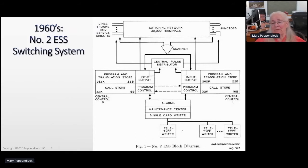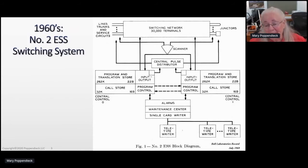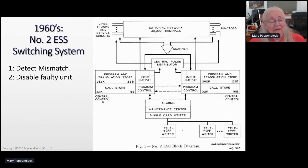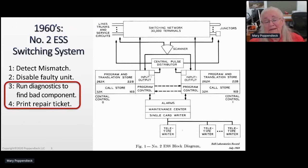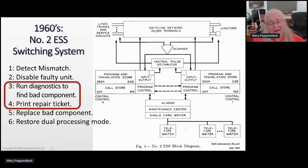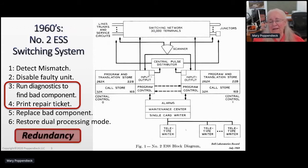There were two separate program stores constantly working in parallel and checking each other to confirm they matched — completely identical pairing. If something went wrong, there was a mechanism to disable the faulty unit and quickly verify that the right one was identified. What I did was write diagnostic programs to find the bad component, the bad card, because we couldn't allow the office to be without pairing for very long. Within a very short time, the operator would replace the bad component and restore dual processing mode. This was a highly redundant architecture.